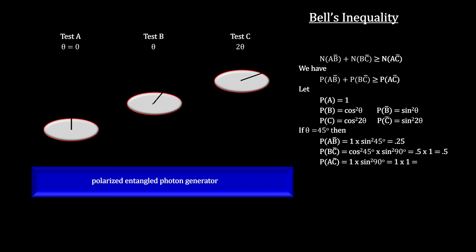For an angle of 45 degrees, we get 0.75 is greater than or equal to 1. Clearly not true. This is called a Bell violation. It tells us that the assumption that states are determined by hidden variables must be false.